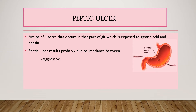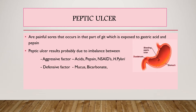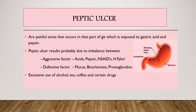The aggressive factors are acids, pepsin, NSAIDs, and H. pylori. The defensive factors are mucus, bicarbonate, and prostaglandin. Also, the excessive use of alcohol, tea, coffee, and certain drugs like corticosteroids, reserpine, and indomethacin also cause ulcers.